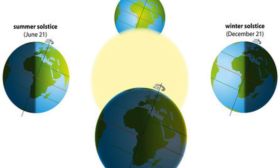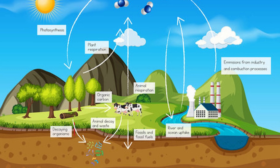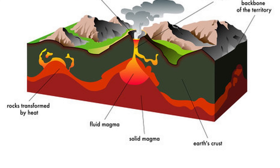The formation and breakup of supercontinents like Pangea have had profound impacts on climate. When continents are clustered together, they can affect ocean currents and atmospheric circulation. The carbon cycle is a critical geological process that regulates the concentration of carbon dioxide (CO2) in the atmosphere, with volcanic activity and weathering of rocks as key components.